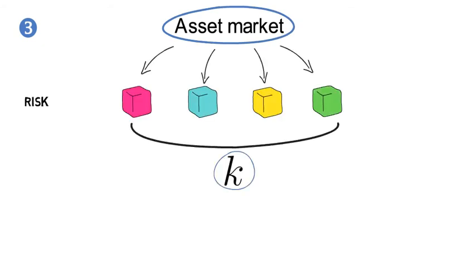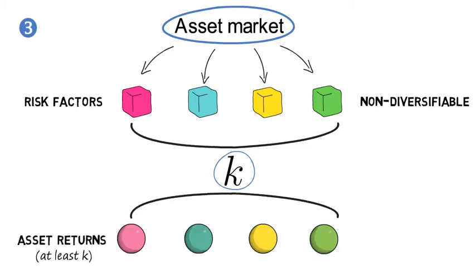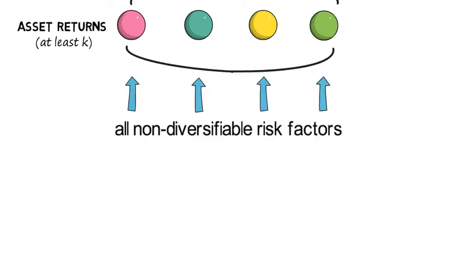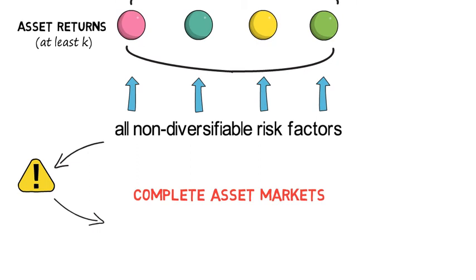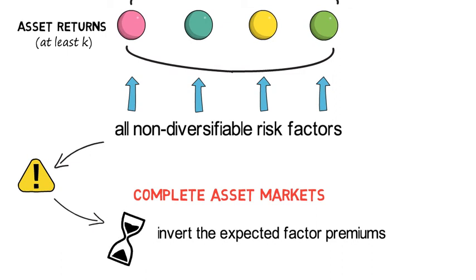Now my third economic insight is that if an asset market consists of K non-diversifiable risk factors, then you need at least K asset returns to span these K systematic risk factors. Now these assets in aggregate need to be exposed to all of these non-diversifiable risk factors. If that is the case, and only in that case, which by the way we call complete asset markets,